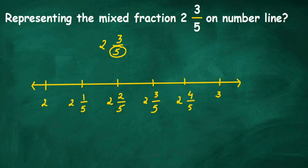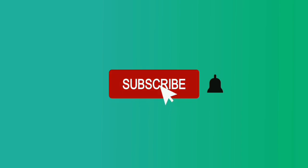Converting 2 5/5 gives us 3, which confirms the endpoint. We want 2 3/5, so the answer is this point here — that's the mixed fraction marked on the number line. I hope it's clear. If you have any doubts, you can drop a comment. Thank you so much for watching.